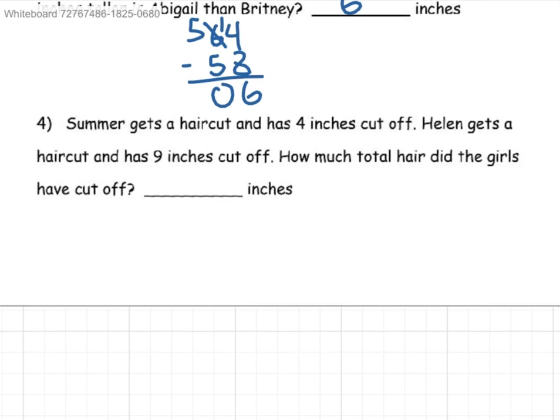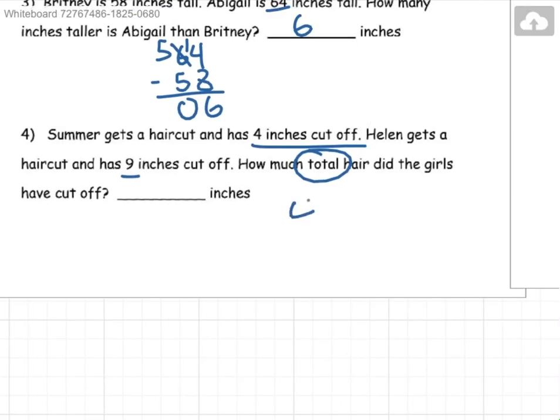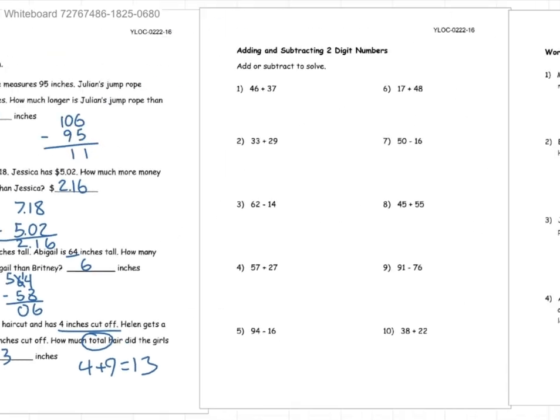Summer gets a haircut and has 4 inches cut off. Helen gets a haircut and has 9 inches cut off. How much total hair did the girls get cut off? So total meaning we're adding. So 4 plus 9 is equal to 13. So in total, 13 inches was cut off.